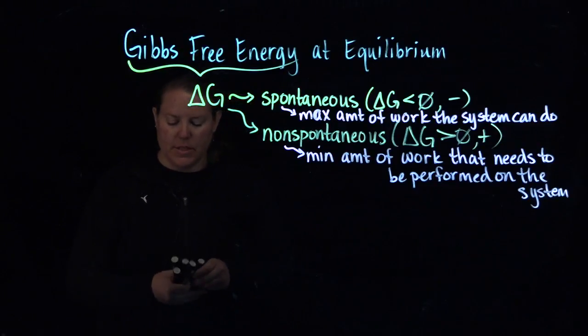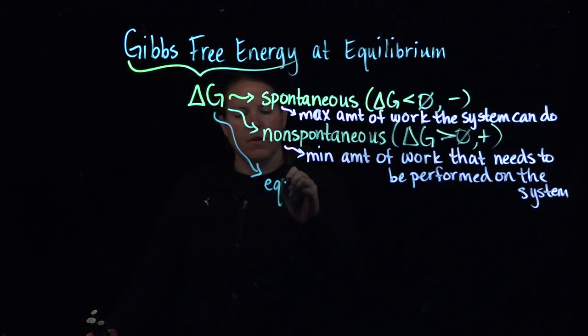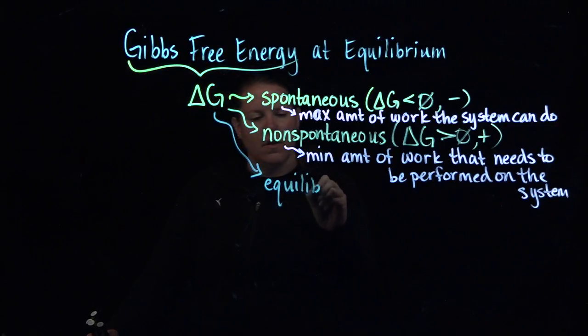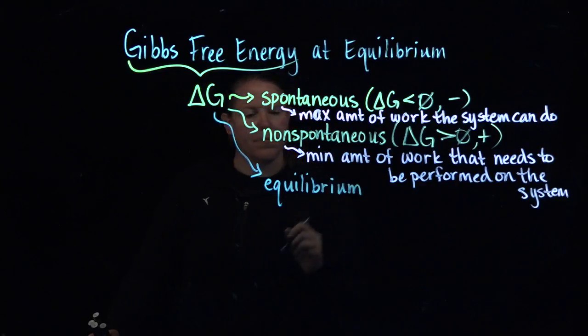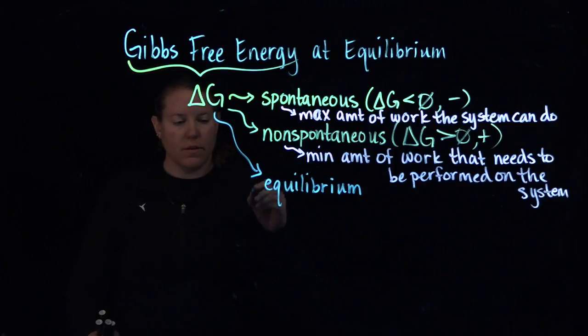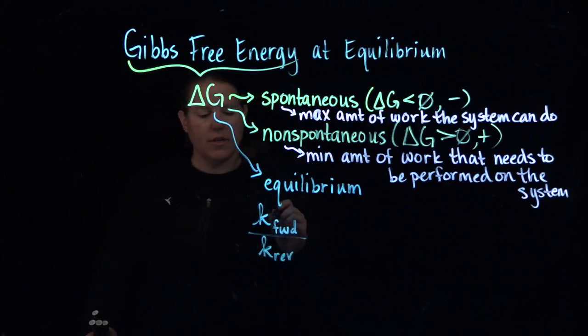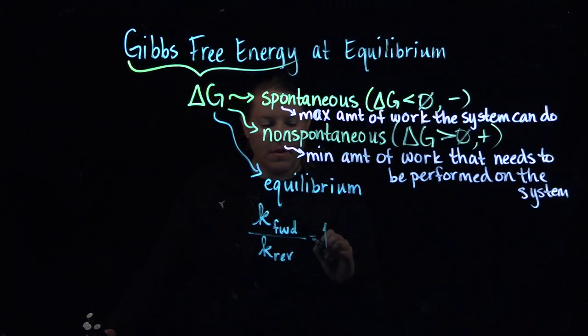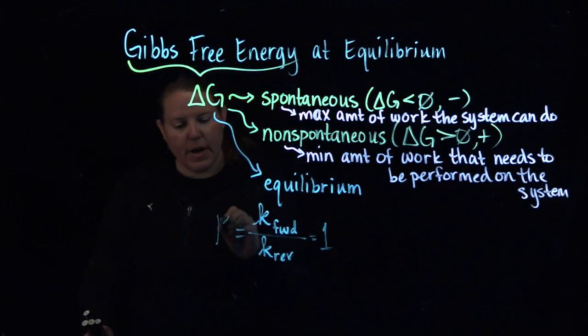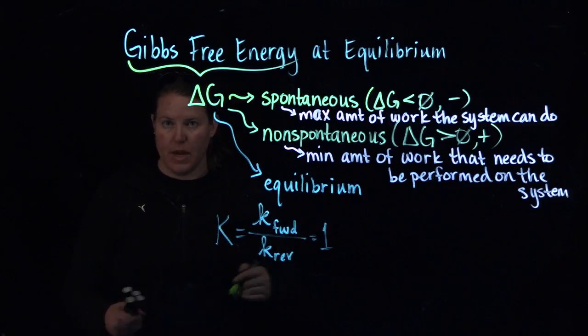But what happens if a system is at equilibrium? What if delta G is at equilibrium? Well, what is the definition of equilibrium? The definition of equilibrium is that the rate of the forward reaction is exactly the same as the rate of the reverse reaction. And if these two numbers are the same, and this is how we define how we calculate K or Q, then that's equal to one when they're the same.